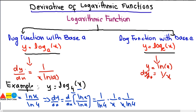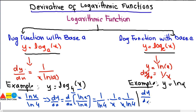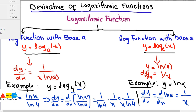This is how you find the derivative of functions with a different base. Now for the derivative of functions with base E: Y equals natural log of X, and dy/dx of natural log of X is 1 divided by X. These are the simple examples. Let's move to some complex examples to better understand how to solve logarithmic functions.